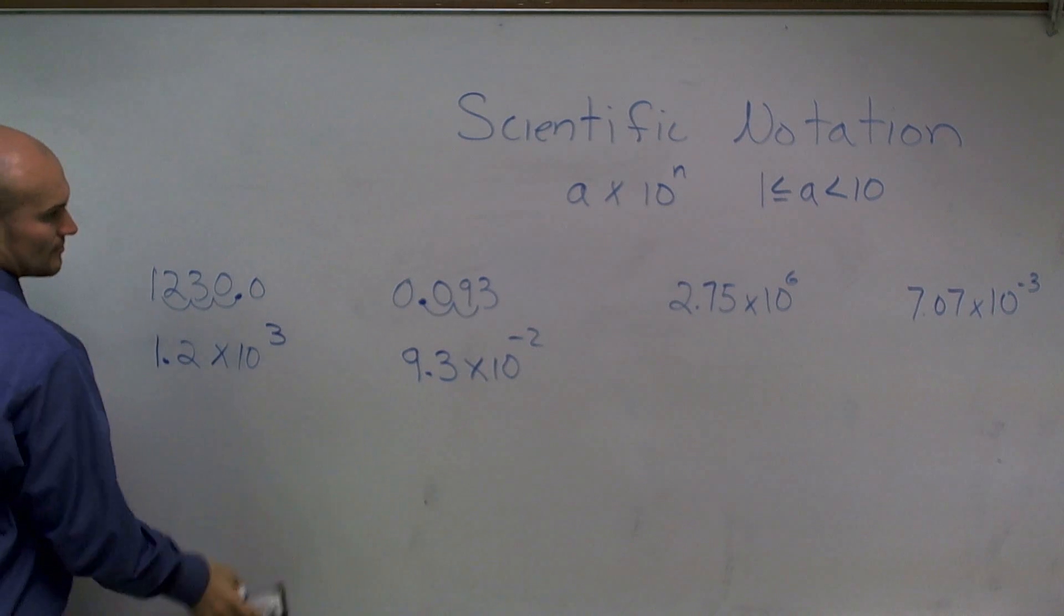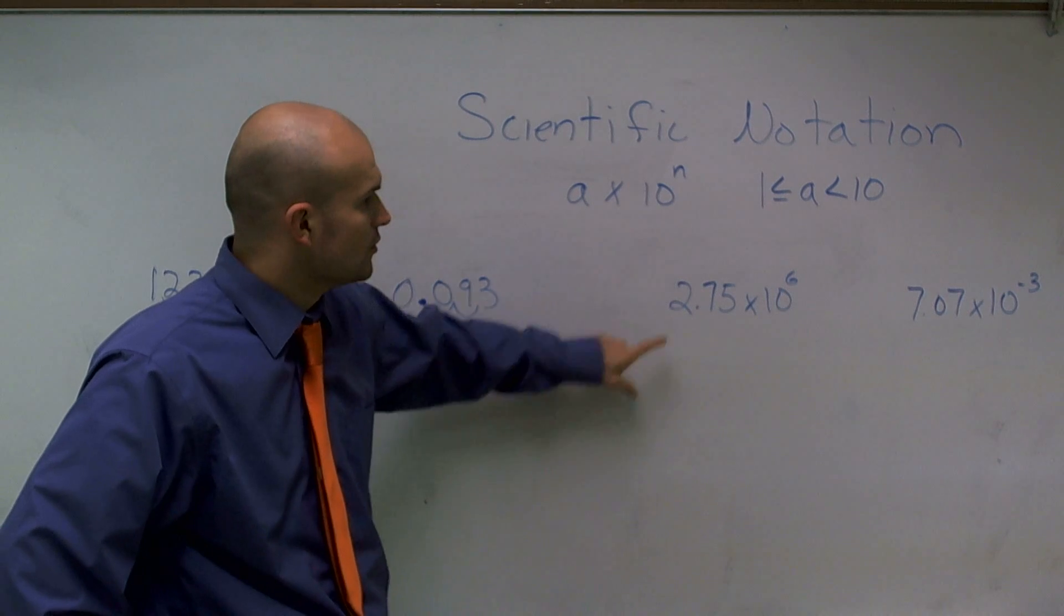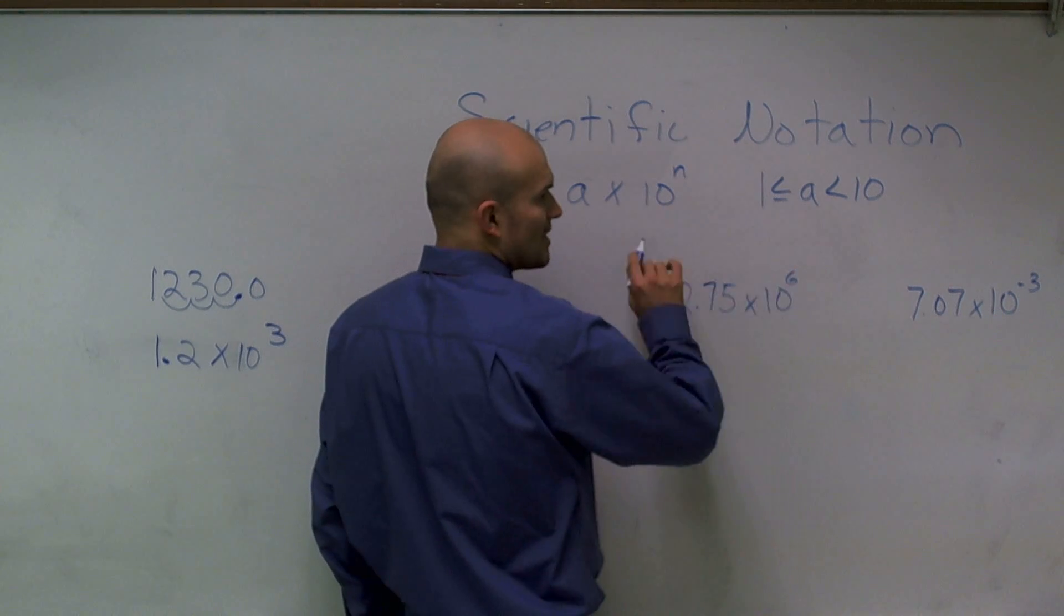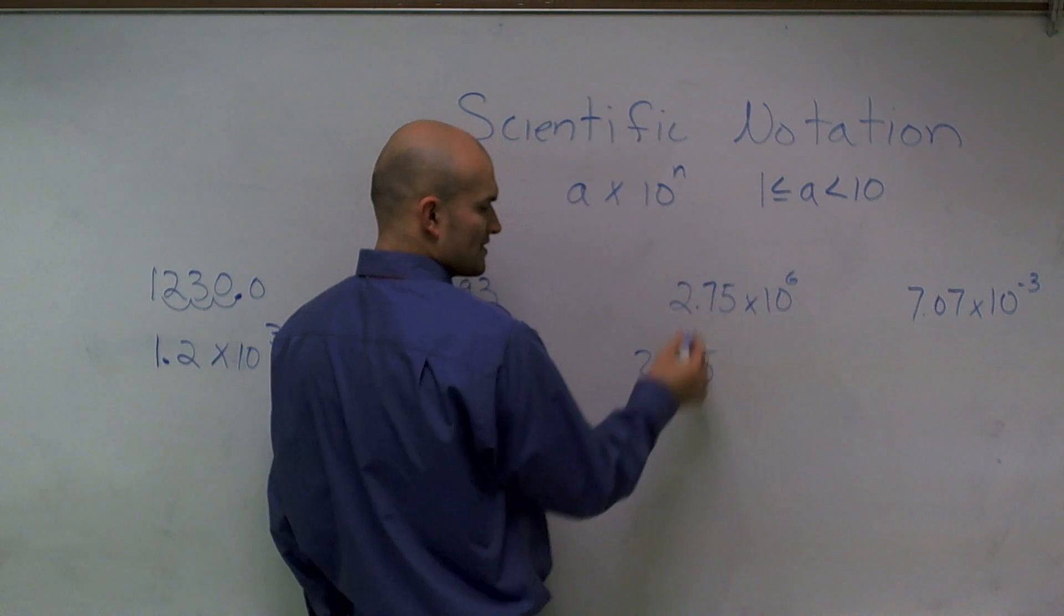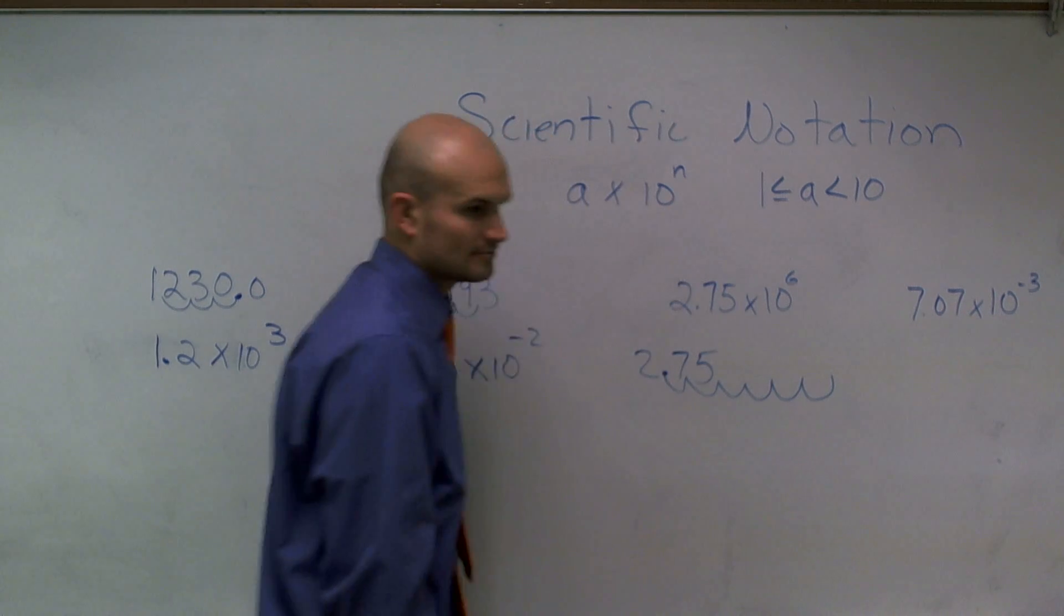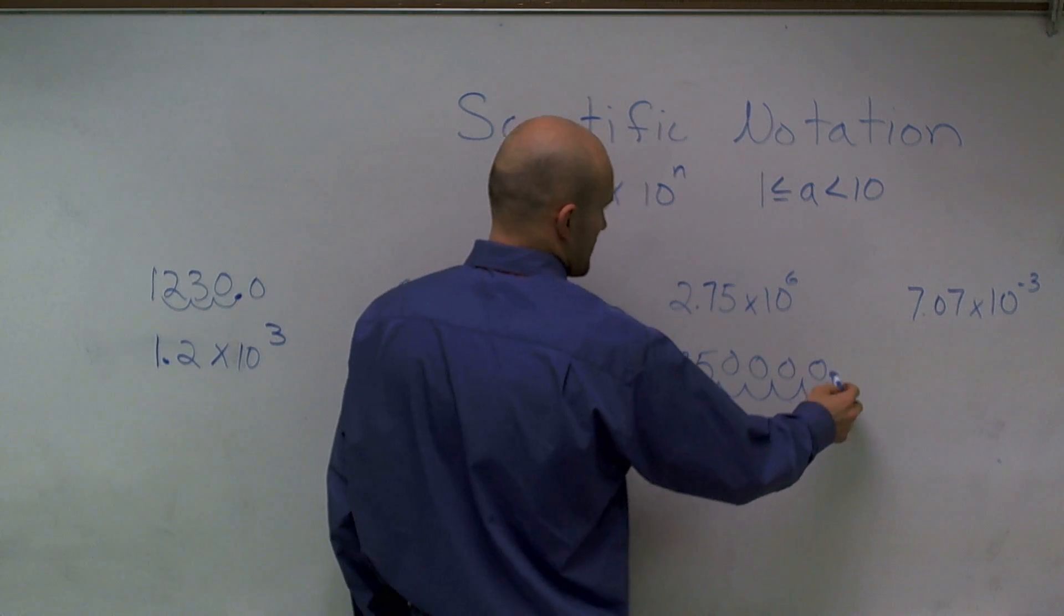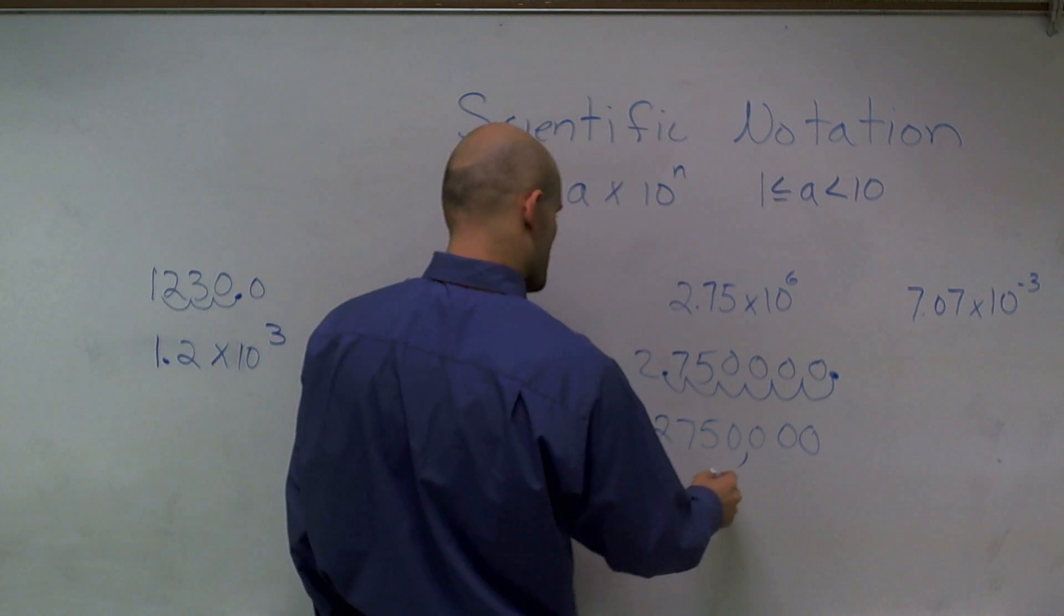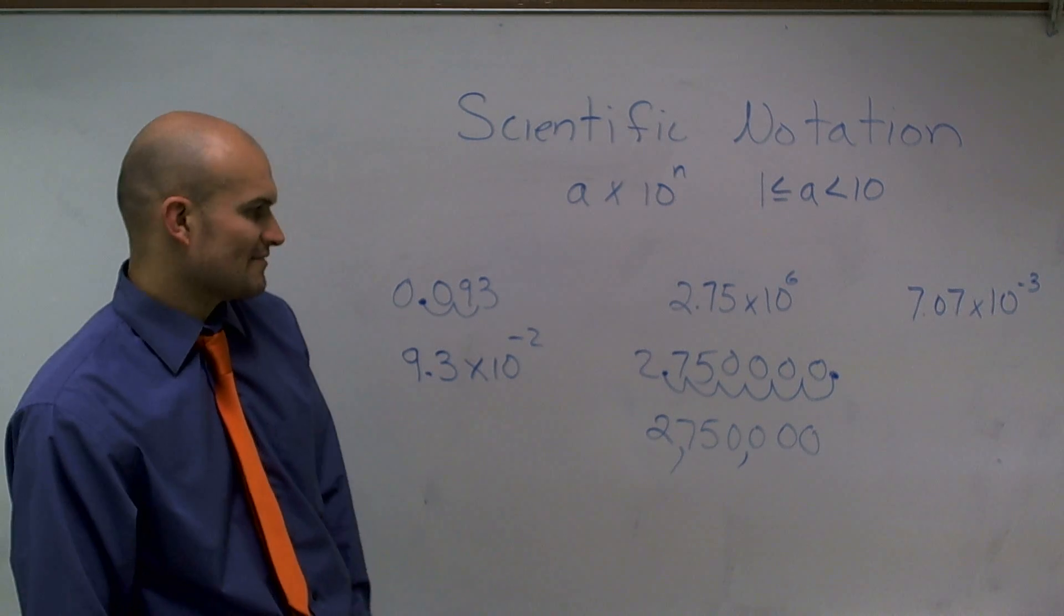So now, if I want to convert this over to an integer, if I have 2.75 times 10 to the 6, all this tells us to do is to go in the right direction, to the right, and I need to use 6 decimal places. So it's at 2.75, so I need to move it over 6 spots. So I pretty much just count 1, 2, 3, 4, 5, 6. And then you just fill in these spots with zeros. So my new number is 2,750,000.